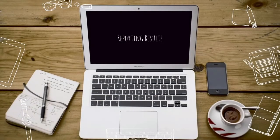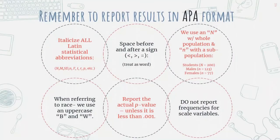We need to report our results in APA format, and there are quite a few rules to be aware of. One of the biggest mistakes students make is forgetting to italicize all Latin statistical abbreviations — not Greek, only Latin. So when using N for count, M for mean, SD, lowercase n for subpopulation count, F for ANOVA, t for t-test, etc., we need to italicize the abbreviation, not the numbers that go with it. Another important rule: we want a space before and after a sign — less than, greater than, or equal sign should be treated like a word with spaces on both sides.